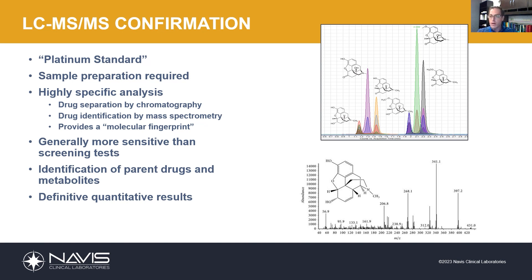Sample preparation is required in these cases — we're taking our specimens, extracting the drugs from those specimens, and analyzing them. These assays are highly specific. We use a technique known as chromatography to separate all of the drugs from one another. You can see on this graph that all these peaks represent individual drugs present in a sample. We're identifying them one by one using mass spectrometry, measuring the molecular weight of the compound, breaking the compound apart into individual fragments and measuring the weights of those fragments. That technique provides what I like to call a molecular fingerprint, and it gives us a definitive result — we know definitively which drug is present in the sample.